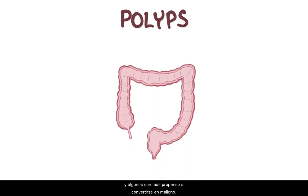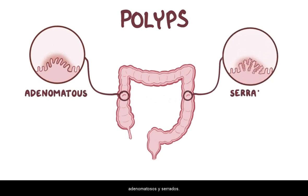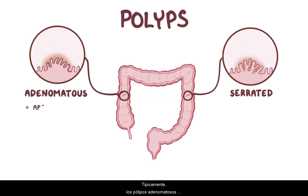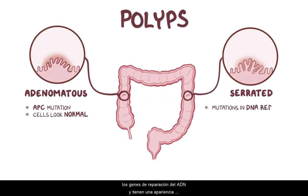There are many different types of polyps, and some are more prone to becoming malignant. Those are called premalignant or neoplastic polyps, and these premalignant polyps can be classified into adenomatous and serrated, according to how they look under the microscope. Typically adenomatous polyps have an APC mutation, and the cells look like normal colonic mucosa cells, whereas serrated polyps have defects in DNA repair genes and have a sawtooth appearance.